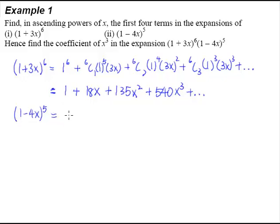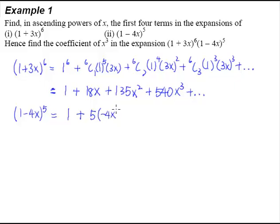The first term, which is 1 raised to the power of 5, is 1. Then plus 5C1 — as we mentioned, 5C1 is 5. 1 to the power of 4 is 1, so it doesn't make a difference whether we write it or not; we can leave it blank to simplify. The second term, which is -4x, will be raised to the power of 1. Next term is 5C2, and we can simply ignore the 1, so it will be (-4x)^2. The fourth term is 5C3, with the second term raised to the power of 3, plus dot dot dot.